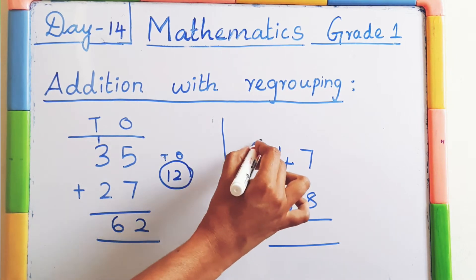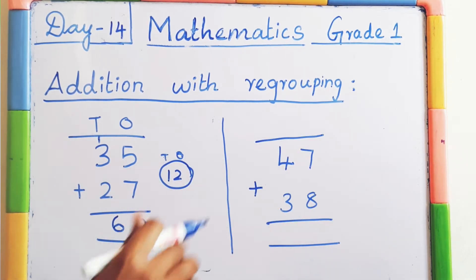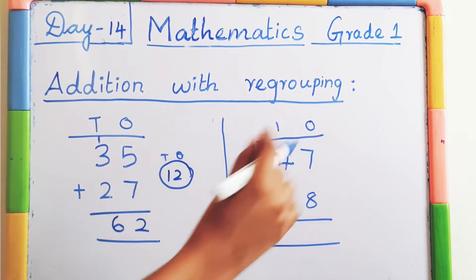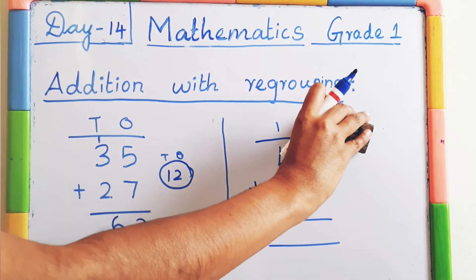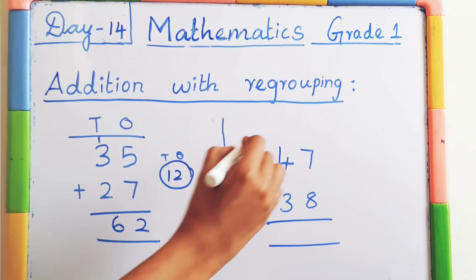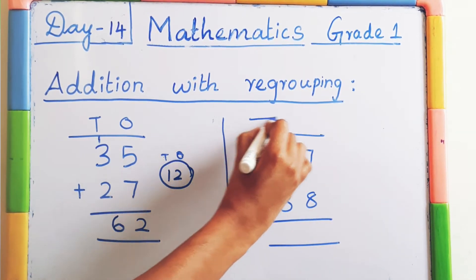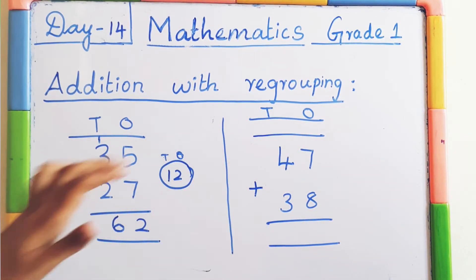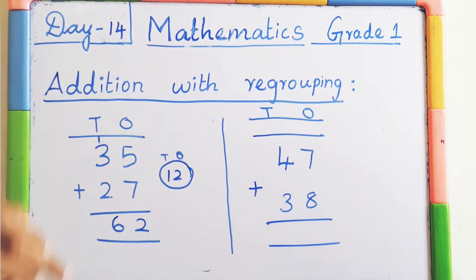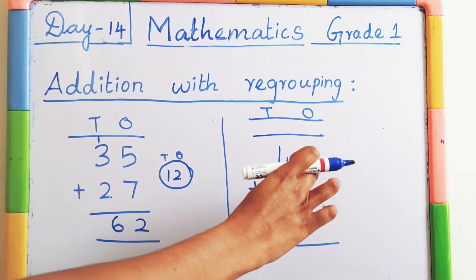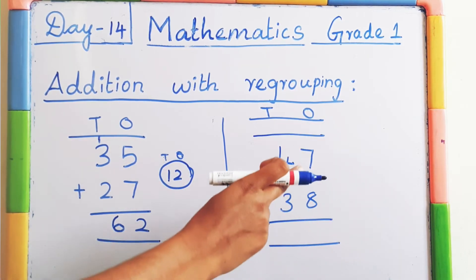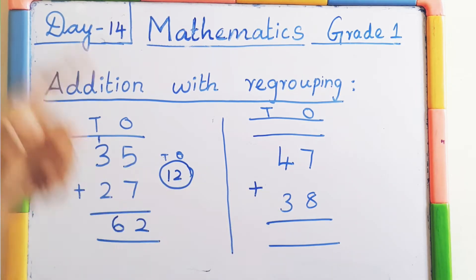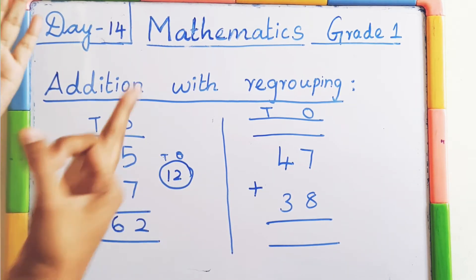Let's see one more model, then you will understand very clearly. First step: always write ones and tens. First start with the ones place. The numbers are 7 and 8, so add these numbers. Keep 7 in the mind, 8 on the fingers.